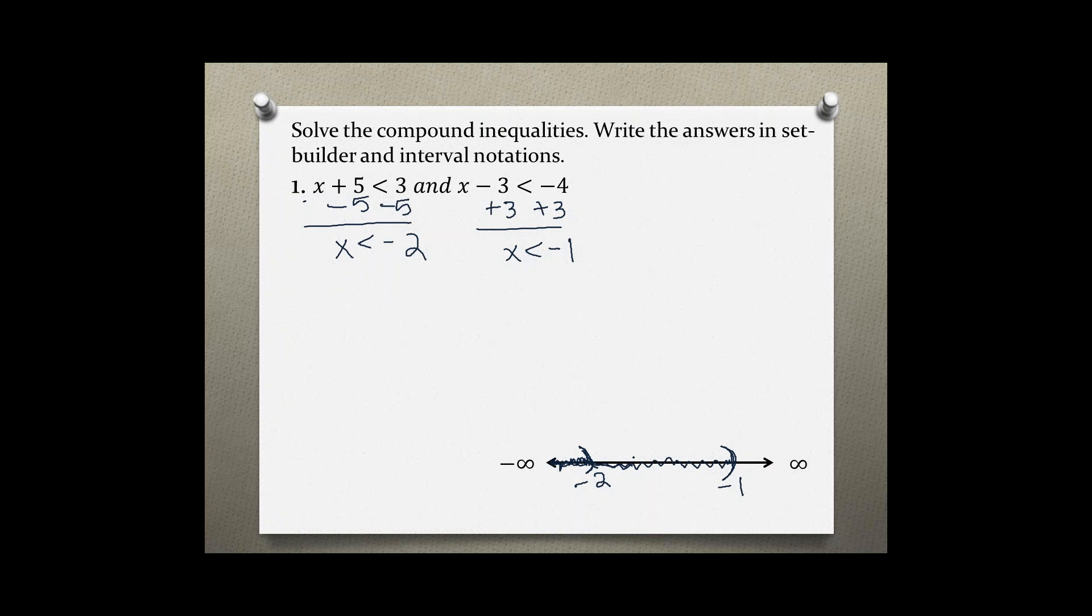This is a compound inequality and it's and, so we only need the intersection. So that would be this section here. x is less than negative 2.